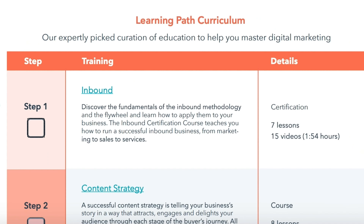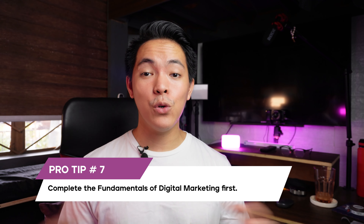According to HubSpot Academy, it may take about 2 to 3 weeks to finish the whole 15 chapters of training, from inbound marketing to content strategy to SEO training, YouTube training, and many more. One pro tip: complete the Fundamentals of Digital Marketing first before starting on the learning path. It's a 15-part series where you will learn everything there is to know about how you can start your digital marketing journey. If you want to know if each course or section is worth watching, you may check out our playlist discussing everything there is to know about that course.